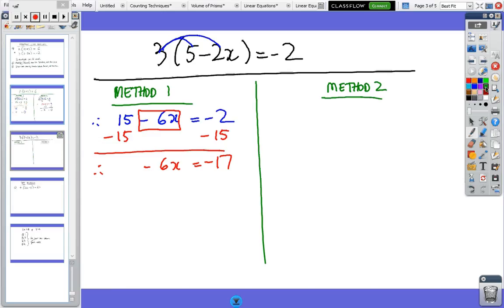Then divide both sides by minus 6 to get rid of the minus 6. So x equals minus divided by minus is a plus, and so the answer is 17 on 6 which you can write down as 2 and 5/6. But 17 on 6 is fine.